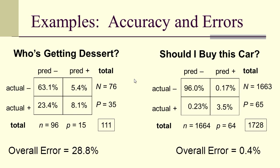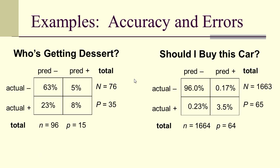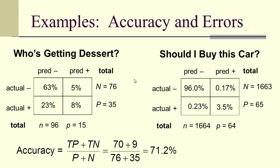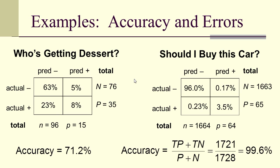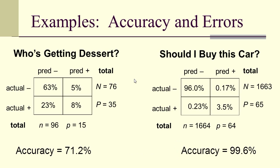We can change these into percentages as well. The accuracy — correctly labeled over total — is 71.2% for who's getting dessert, and 99.6% accuracy for should I buy this car.